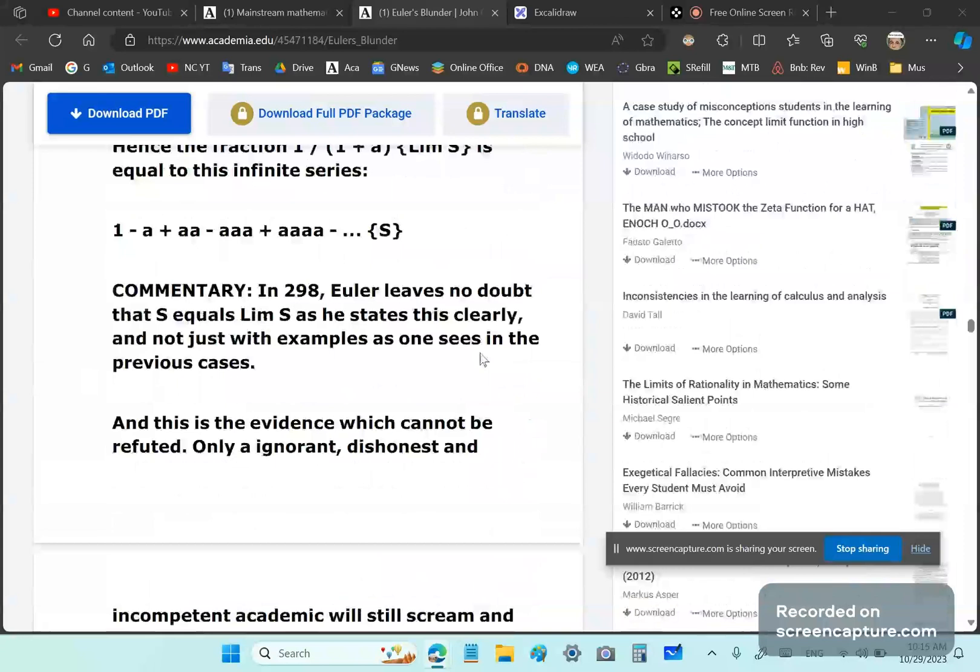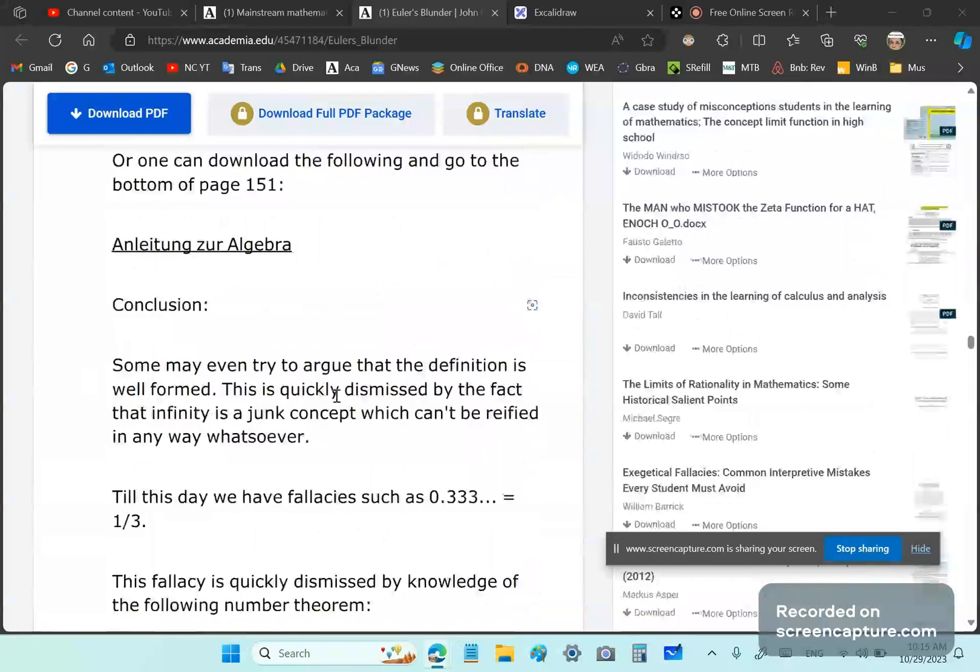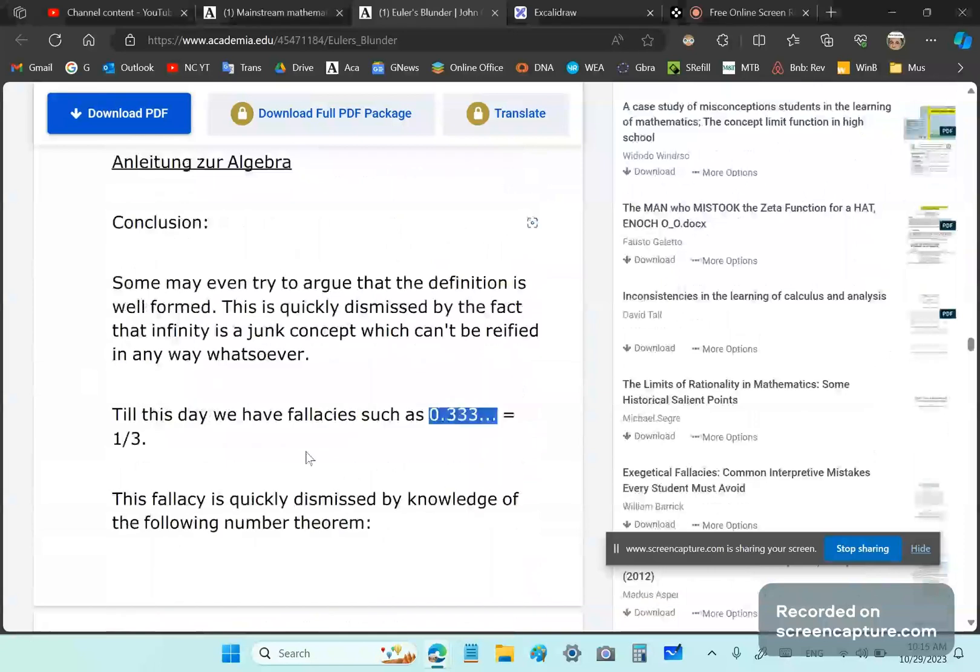In these cases, yeah he just does some examples, but then here he moves away from the examples and he says, yep, this is the general case. So as a result of that, we have fallacious definitions or ill-formed definitions such as 0.333 dot dot dot equal to third.